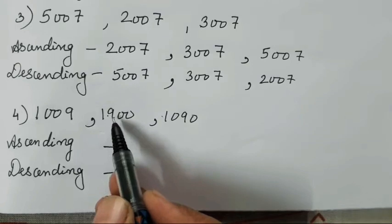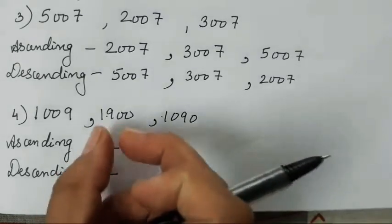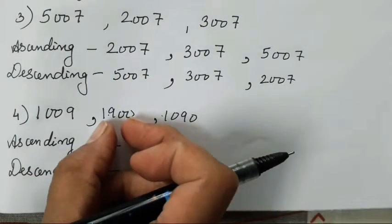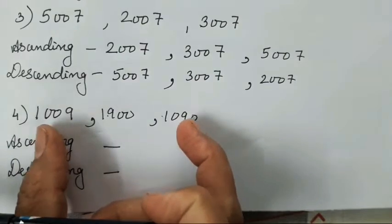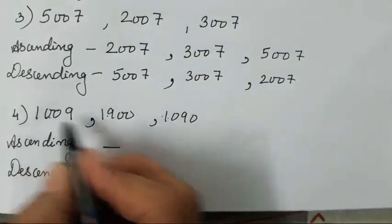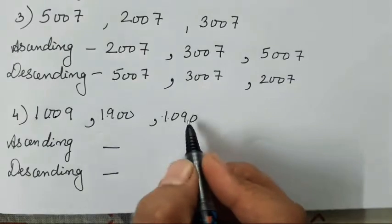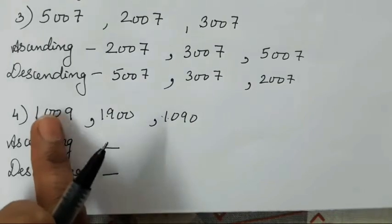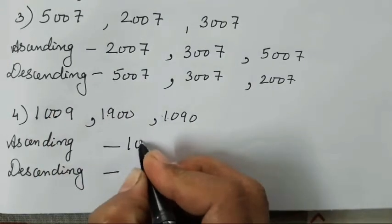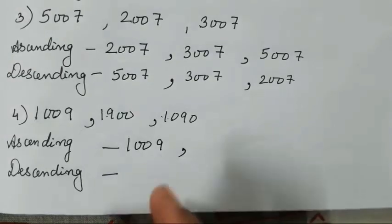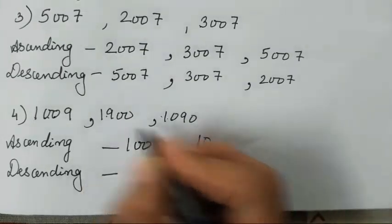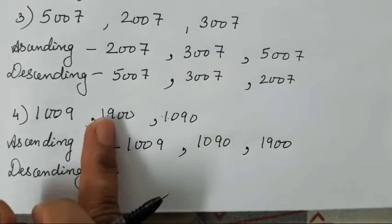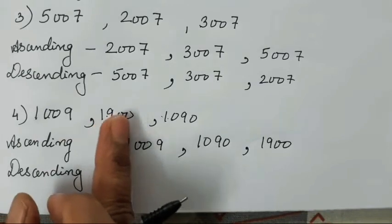Next is going to be 0. Then over here 9 is there, and over here again 0 is there. So this is going to be the biggest number. You should understand 9 is bigger than 0. So this is going to be bigger than these two. So now compare these two. 1, 0. Here it is 0, here it is 9. So again 9 is going to be bigger. So 0 is small. So which number will come?